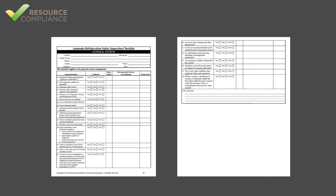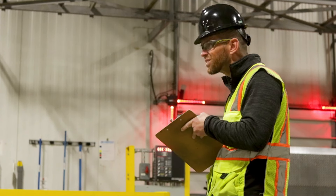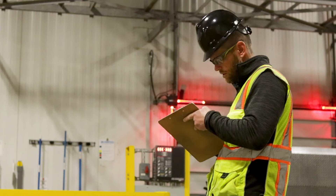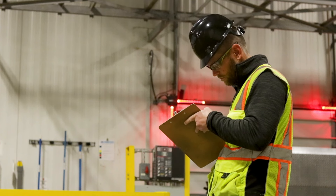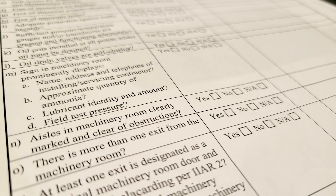Unlike most of the other inspection checklists, after completing the contact information section, the General System Checklist jumps right into the inspection questions. The General System Checklist has a total of 23 questions that should be answered yes, no, or not applicable. The wording of each question is such that a yes answer is always positive and a no answer indicates a deficiency.